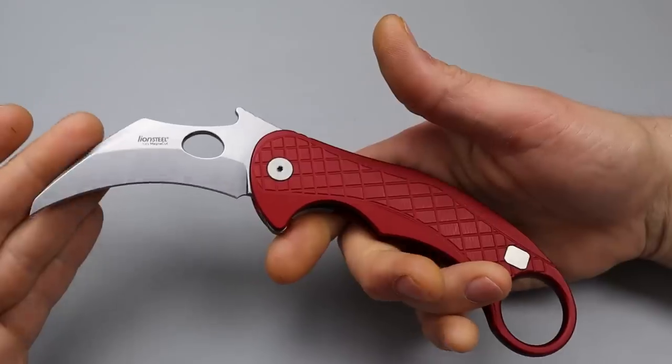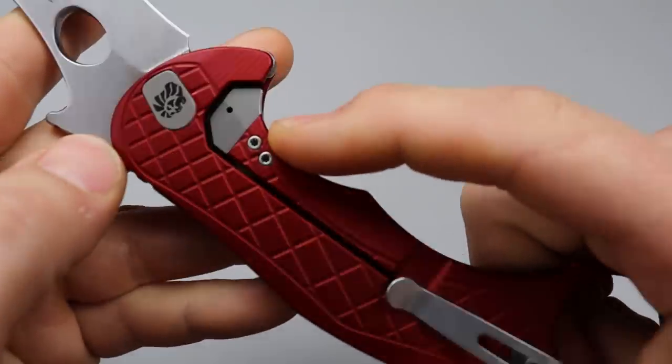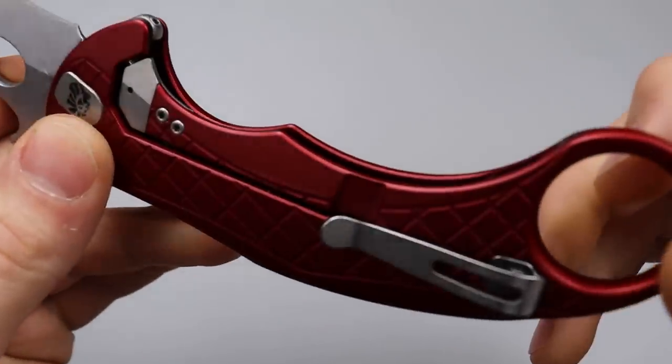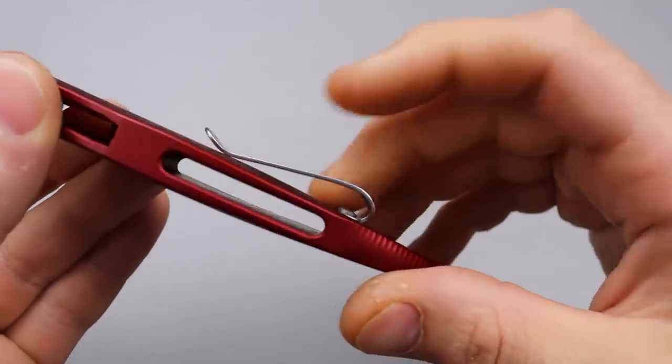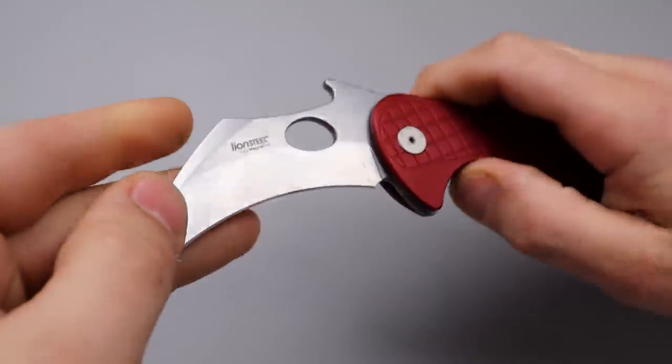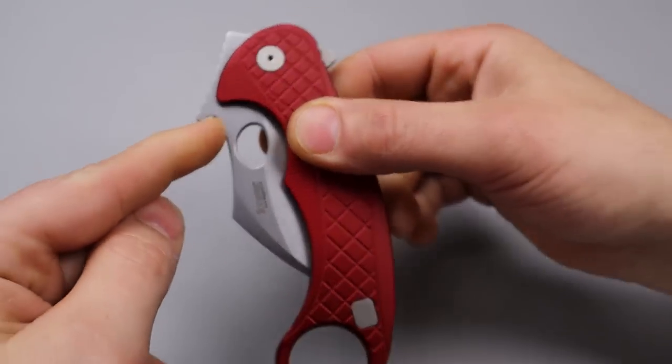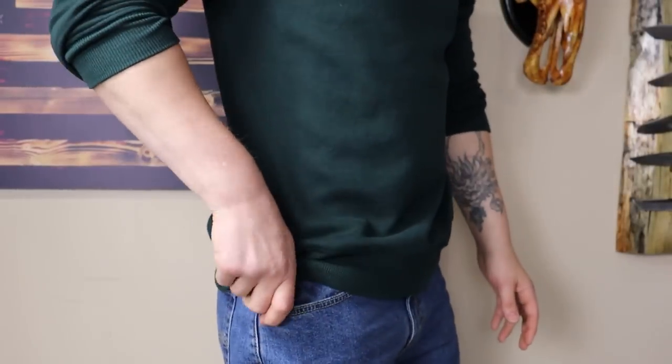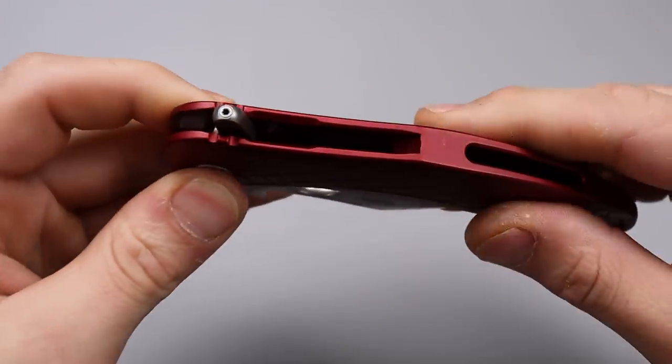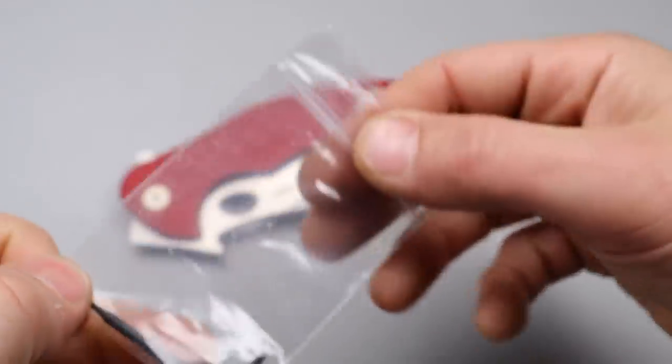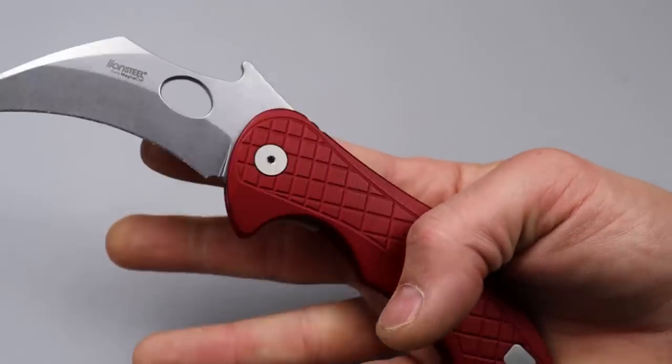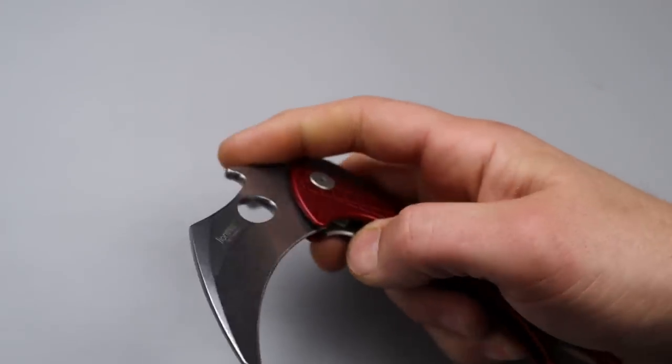We have a steel lock bar insert in here, nice big one too, and we have a reversible deep carry clip. Now it does have the wave feature, and we're going to get into a lot of little details on this. The flipper tab is removable; the tool does come in the box so you can easily take the flipper tab off if you want to only reverse flick it.